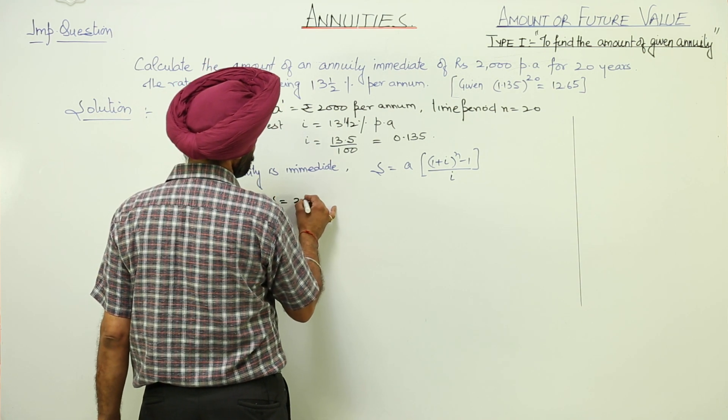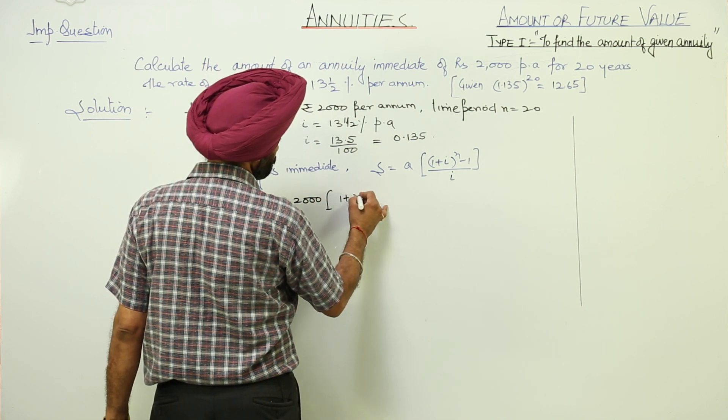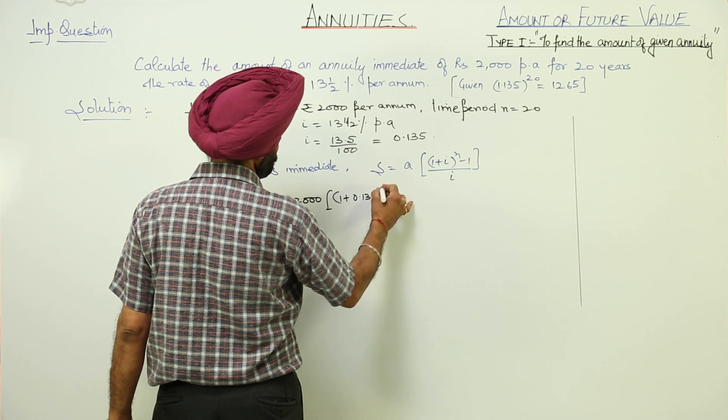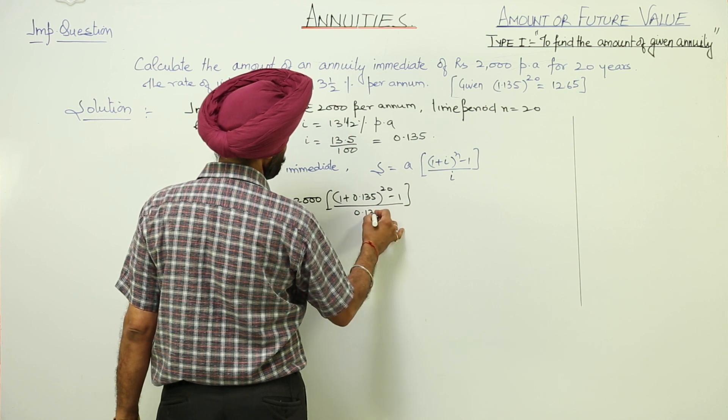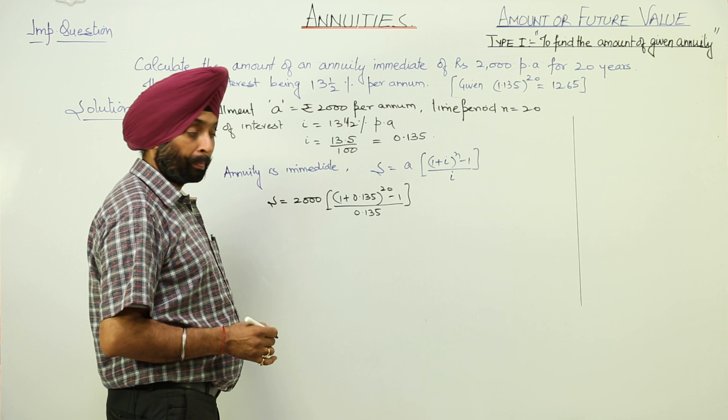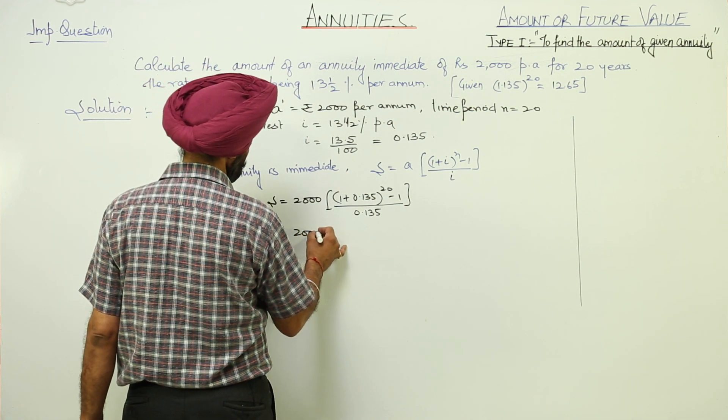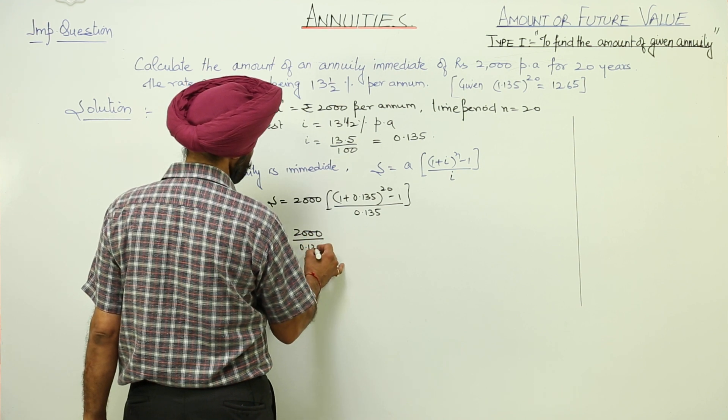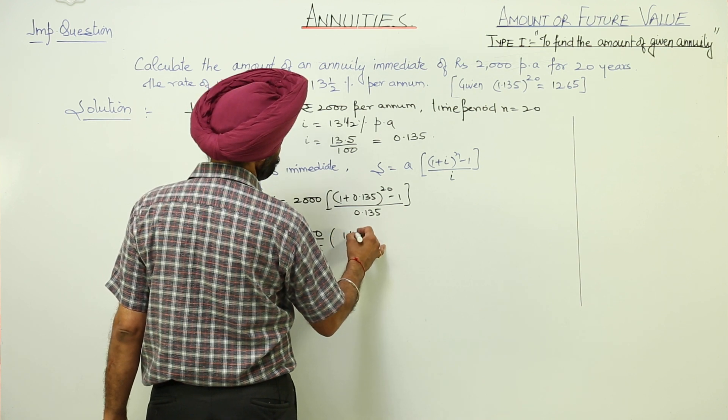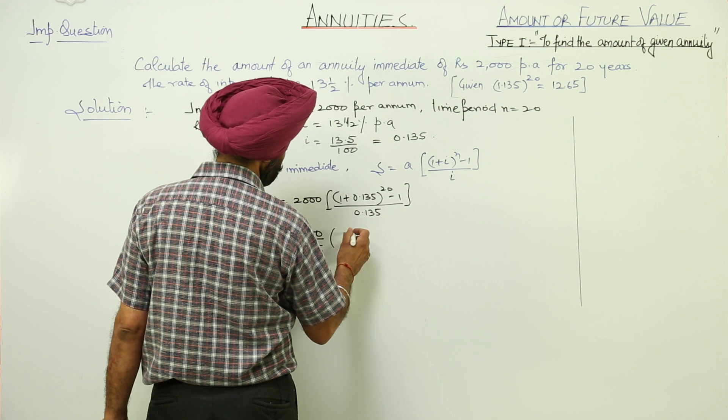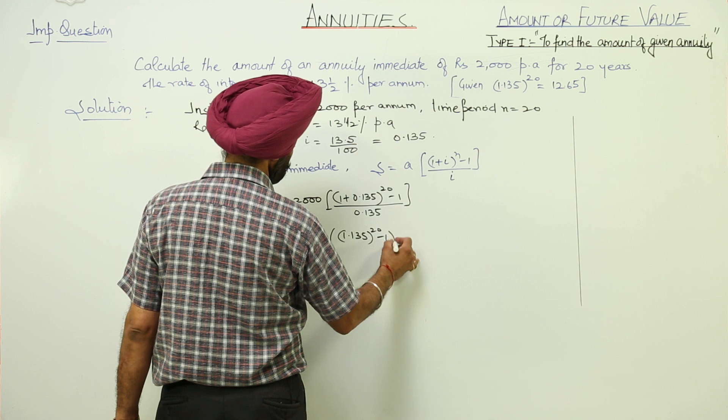S is equal to 2000 times 1 plus 0.135 raise to power 20 minus 1, all upon 0.135. That's 2000 upon 0.135, in the bracket 1.135 raise to power 20 minus 1.